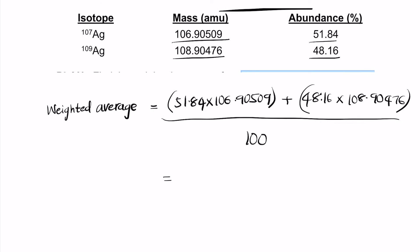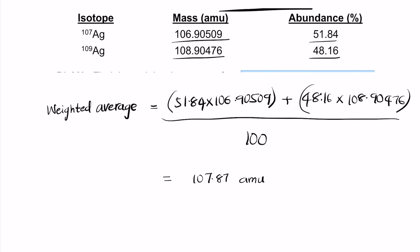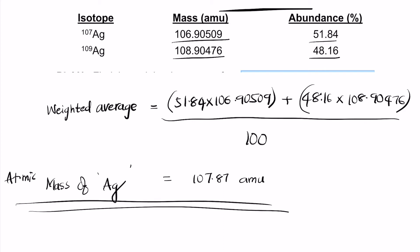The first term gives 55.42 and the second gives 52.45, so the total atomic mass of silver is 107.87 AMU. This is the atomic mass of silver — not the mass of individual isotopes, but the weighted average. The formula is: weighted average = (percentage × mass + percentage × mass) / 100.